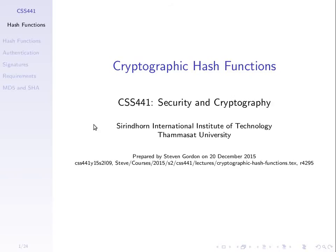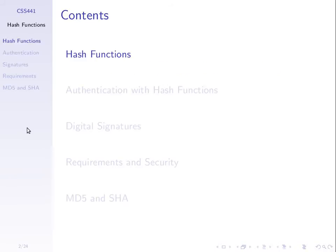So cryptographic hash functions. First, what do we mean by hash function, and then we'll see how they can be used for cryptography. We'll look at general properties of hash functions, how hash functions can be used for authentication as an alternative to MACs. Then we'll see a special case - digital signatures, which will combine hash functions with public key cryptography. At the end we'll look at the specific requirements and properties of hash functions.